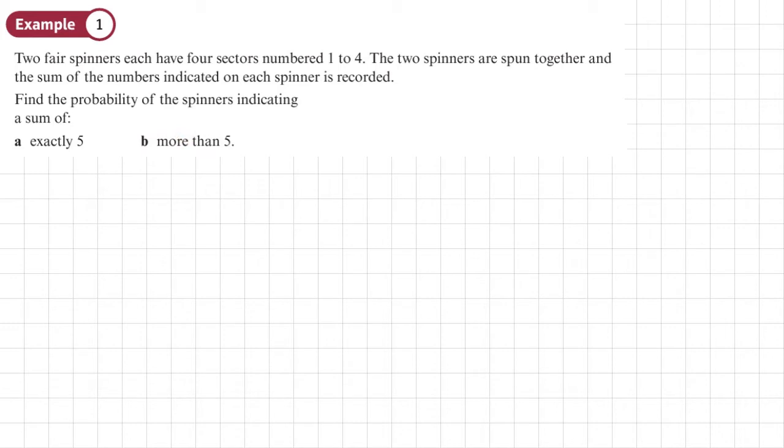The way we need to answer this question is by drawing a sample space diagram that will list or show all the different outcomes possible from spinning these two spinners. So here's my sample space diagram. Now we need to show the sum of the numbers, so we'll just add the numbers like this: three, four, five, six; four, five, six, seven; five, six, seven, eight.